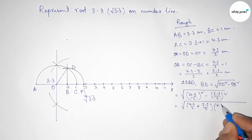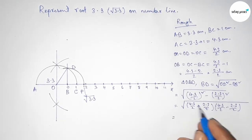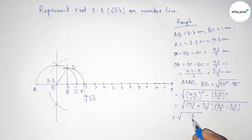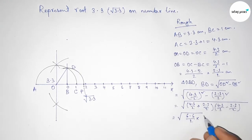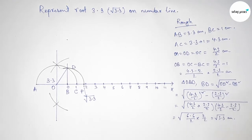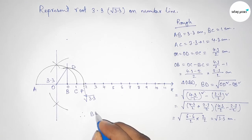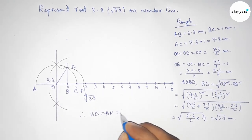From this, we get 6.6 by 2 into 2 by 2, so this is root 3.3 centimeters. Therefore, BD and BP are equal, so this is root 3.3 centimeters.